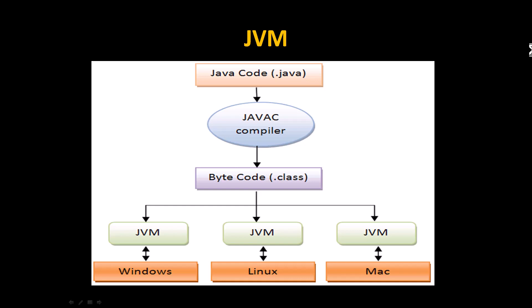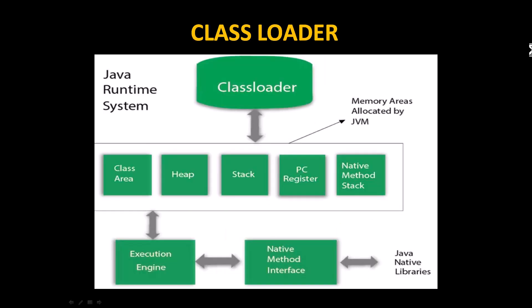Now let's look at how the class loader subsystem works internally inside the JVM. The class loader subsystem is inside the JVM, and it has a pool of data where it loads classes. One class can be associated with or interlinked with many other classes — all classes are executed from the main function. The class loader subsystem identifies how many methods and data members are associated with each class.